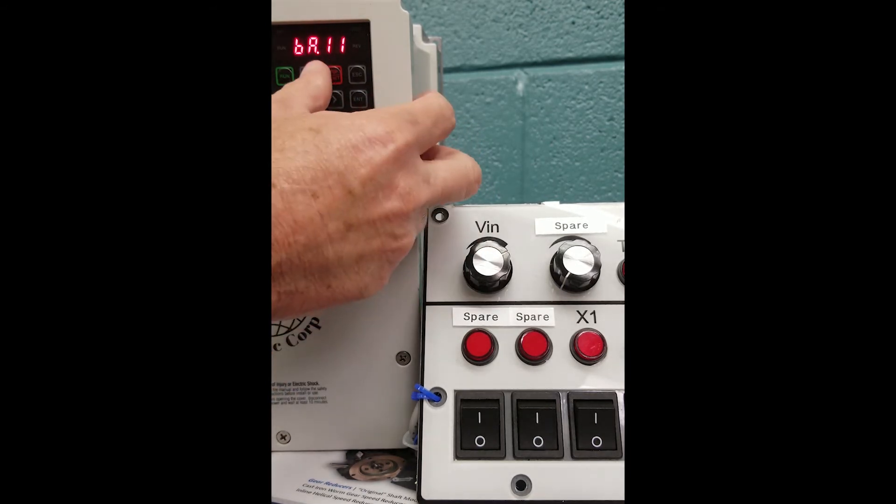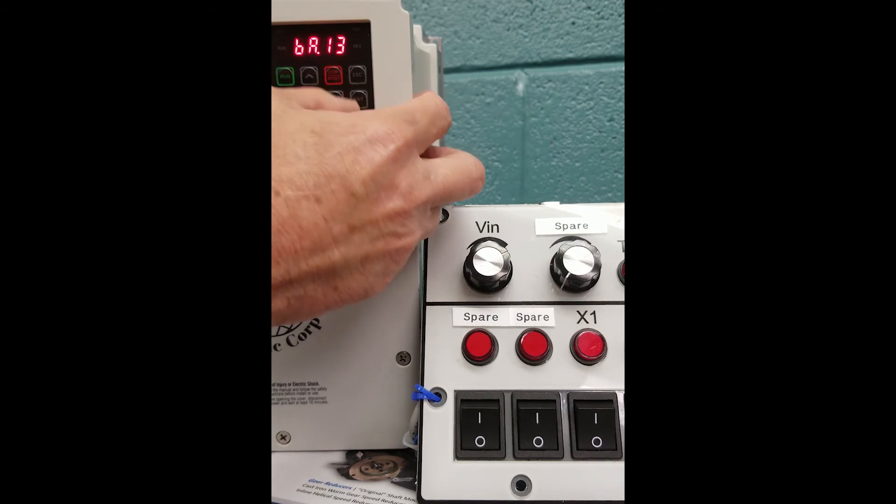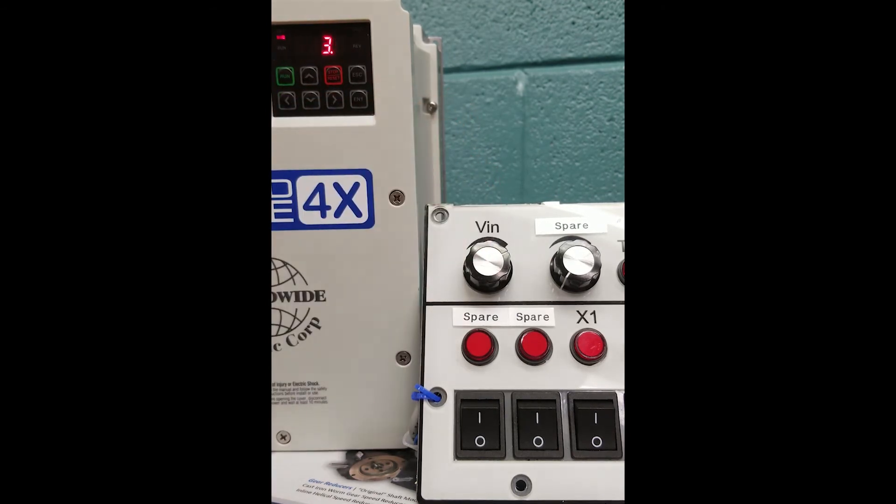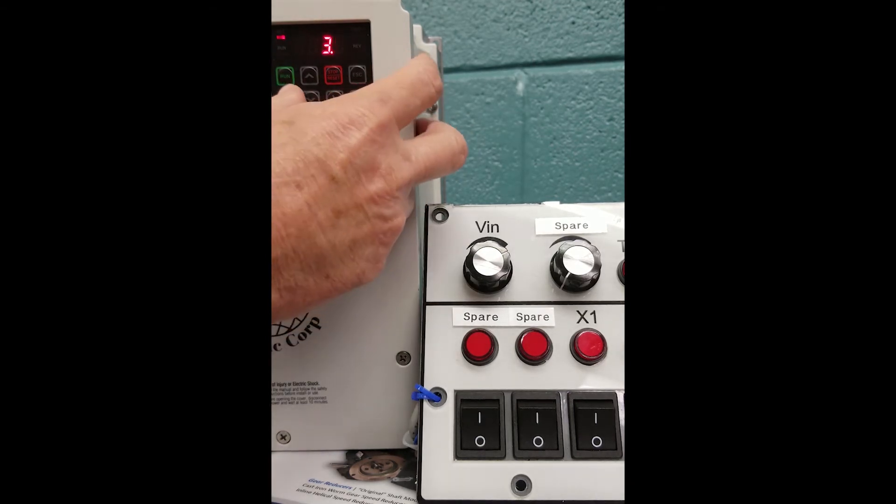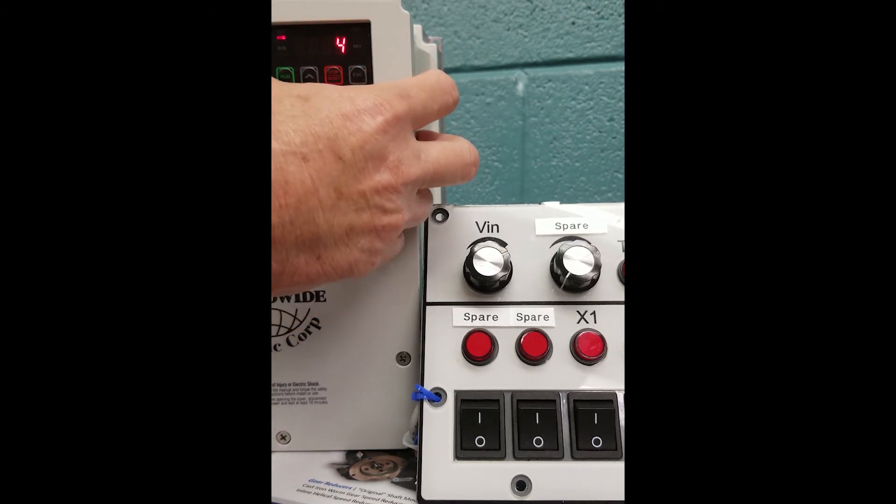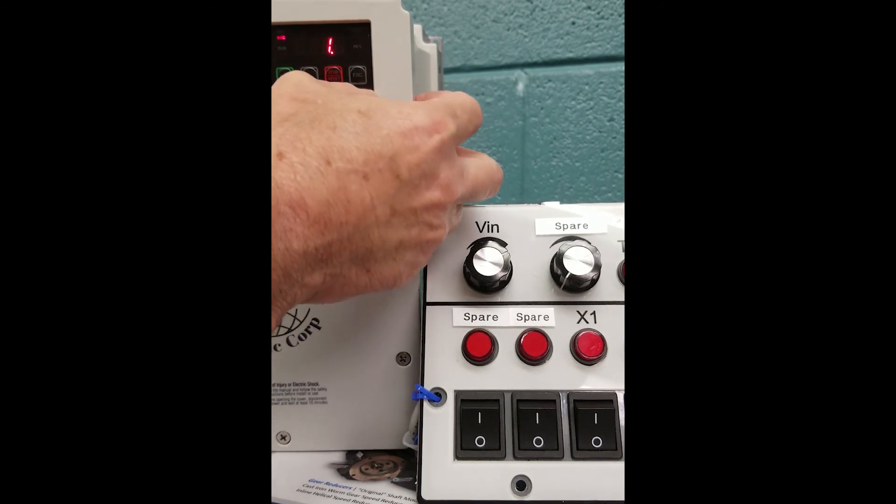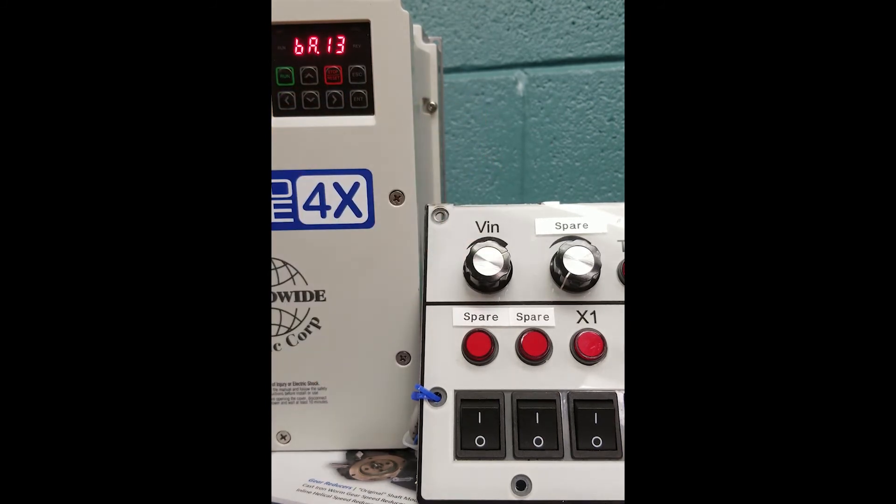We are going to go to BA 13. Hit enter. BA 13 is the full load amps of our motor, factory default at 3.4. Our motor today is 1.7, so we're going to change the 3.4 using our arrow keys over to 1.7. Again, hitting enter twice to store it.